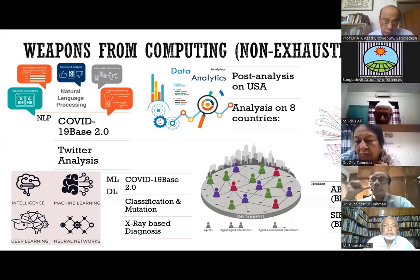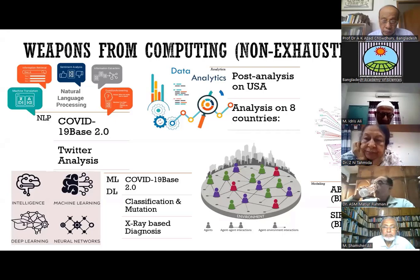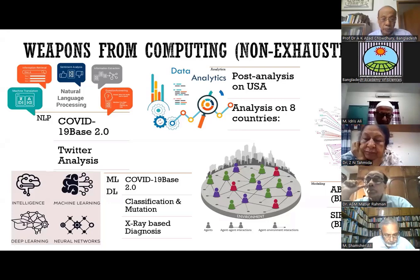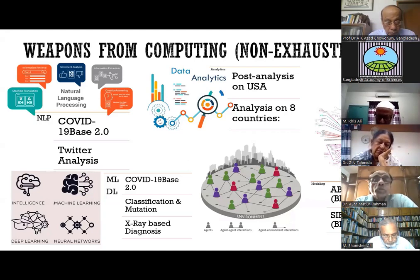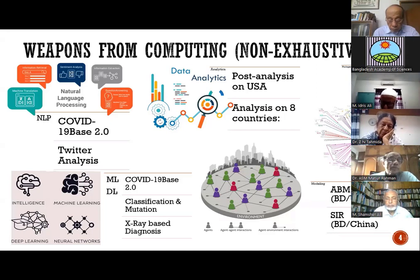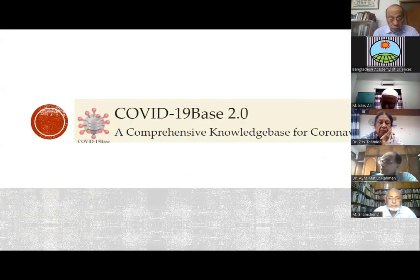We also did some post-analysis on COVID data based on the USA and other countries. We did a phylogenetic analysis on COVID-19 strains, which I find very interesting. Finally, I will talk about epidemiological modeling using agent-based models or SIR models. These are a non-exhaustive list of computing weapons — I'm just going to touch on some of them in this talk.